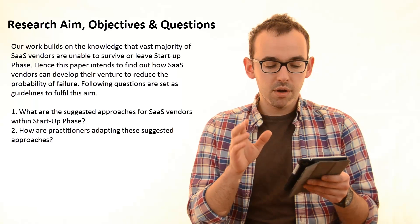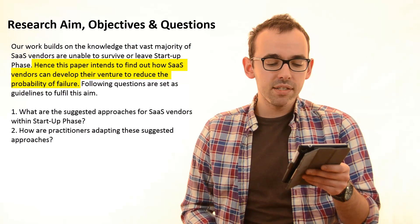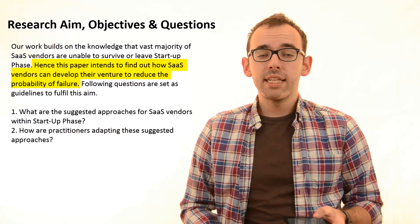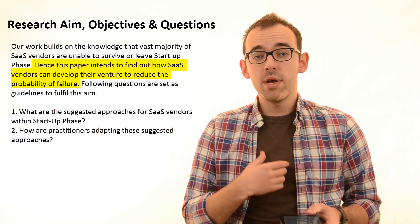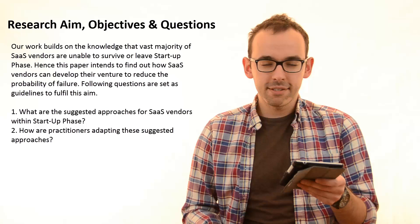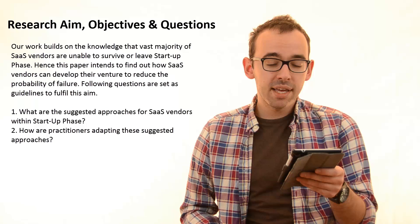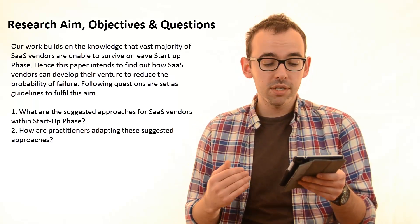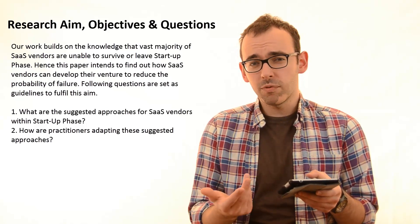Now will come a research objective. Hence, this paper intends to find out how SaaS vendors can develop their venture to reduce the probability of failure. This is a very clear statement saying what we aim to achieve with our research. And now the following sentence is just to be there: Following questions are set as guidelines to fulfill this aim. And now are coming the subsequent research questions, which should, in a bit more detailed way, say how we are planning to fulfill our aim.